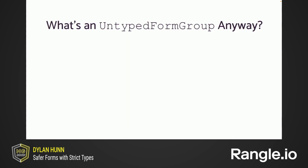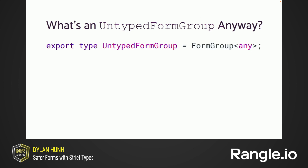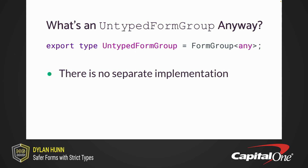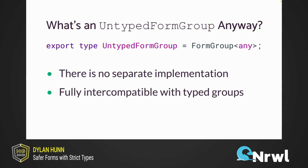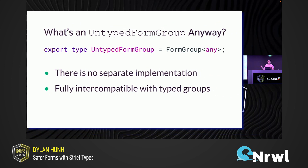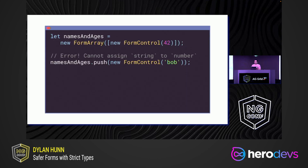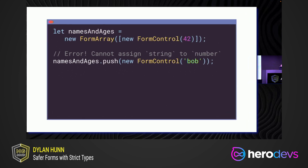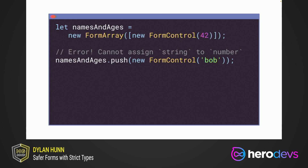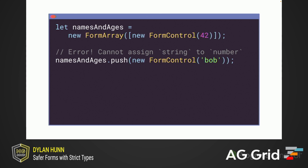What is an untyped form group anyway? No separate implementation is actually needed, because we designed the types to facilitate full backwards compatibility — it's just a typed group with the type parameter T set to any. This gives us the property that the two names are fully intercompatible, with no extra code. In addition to form group, we've also brought these new types to form array. FormArray now infers its type from the controls inside and enforces that newly added controls match the expected type. For heterogeneous arrays, much like the form group case, you'll want to fall back to UntypedFormArray.